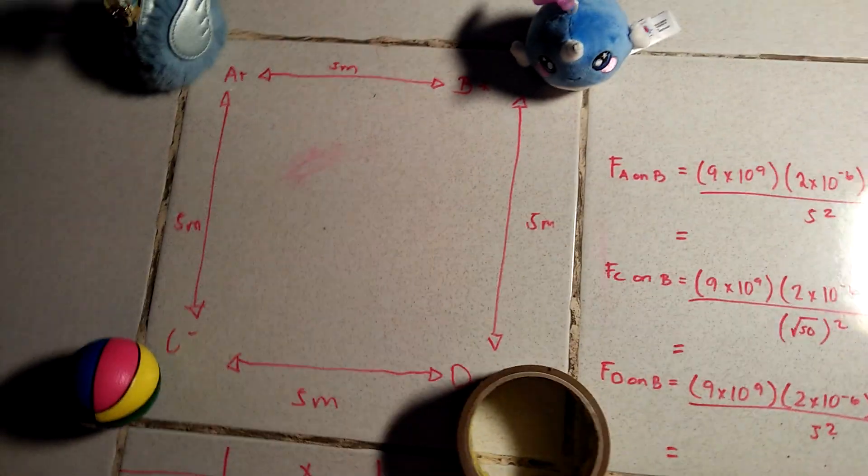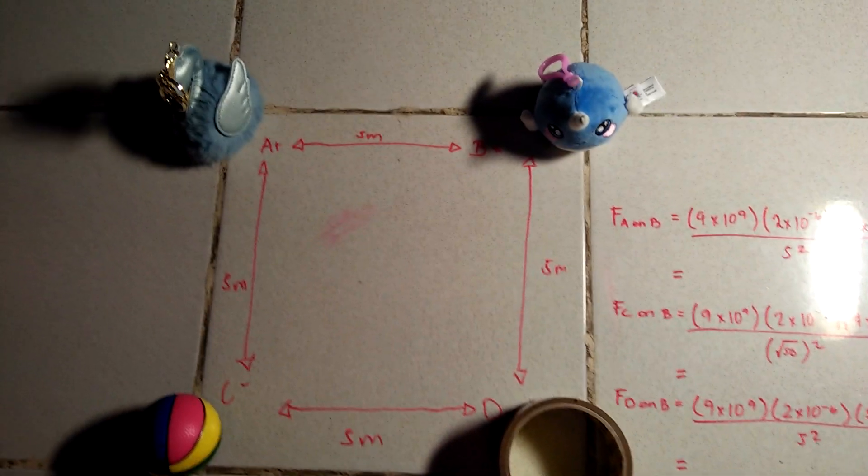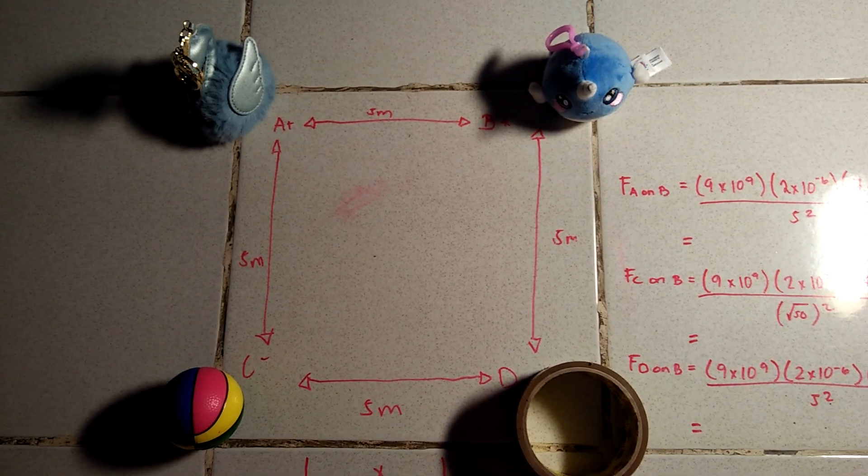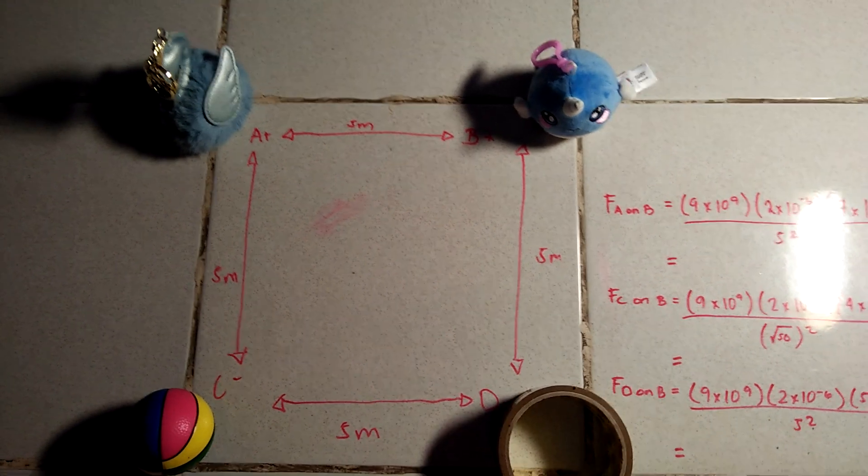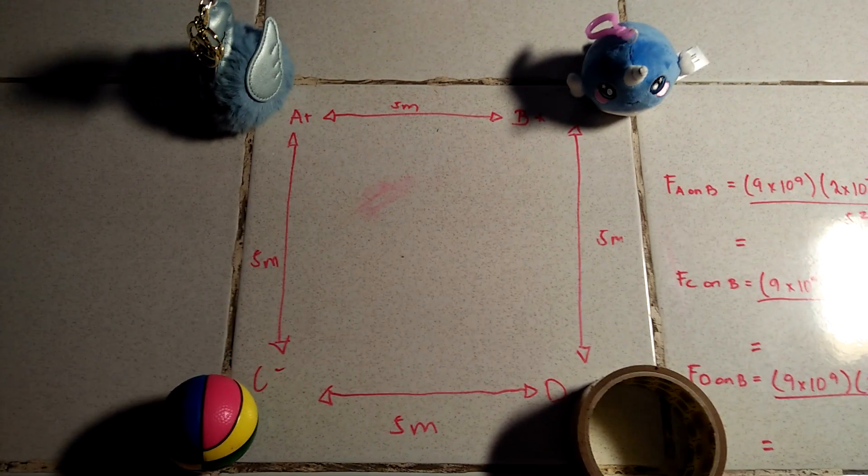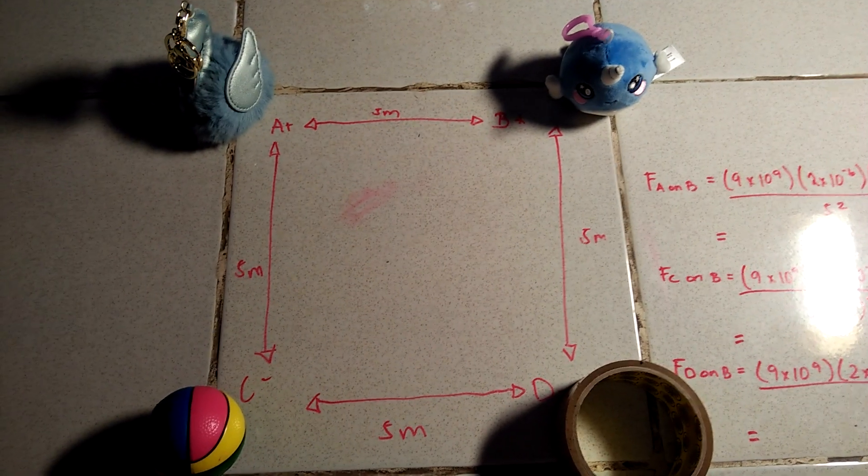So since this is a square, the distance between the four cute objects is the same which is five meters, while the value of our charges are as follows.